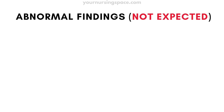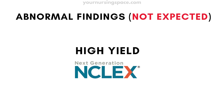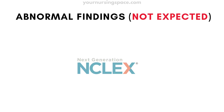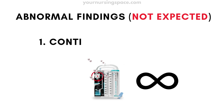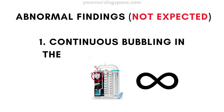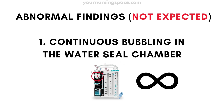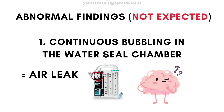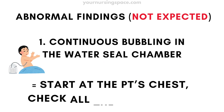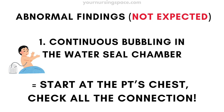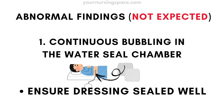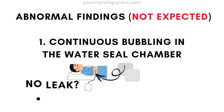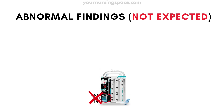Now, what are unexpected findings? These are high-yield topics on exams. Continuous bubbling in the water seal chamber: if bubbling never stops, it means there's an air leak. What should you do? Start at the patient's chest and check every connection in the tubing. Make sure the chest dressing is sealed tightly. If you can't find the leak, call the provider.